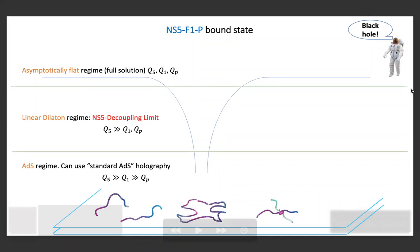There are three regimes roughly speaking that you have to have in mind. From far away, an observer can see something that looks like a black hole—this is the asymptotically flat regime. You have these three charges and you can play with them. If you take Q5 to be much bigger than the other ones, you enter the linear dilaton regime in the so-called NS5 decoupling limit. There's an additional regime called the AdS regime in which you take QP to be the smallest of the charges. This is where you do the standard AdS holography.